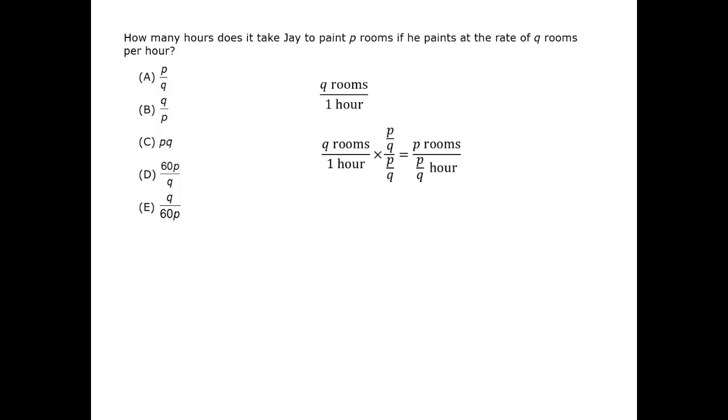The Q's cancel out on top, and we end up with P rooms in the numerator just as we wanted. The time it takes J to paint P rooms at this rate is evidently the denominator, P over Q hours.